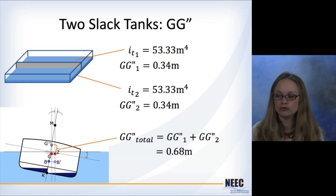To do this, you calculate the free surface correction for each tank individually and then you just add them up. So these are the same tanks we did before. The moment of inertia is 53 meters to the fourth, and then the free surface correction is 0.34. And then to do the total, you just add all those up. So now the total free surface correction is 0.68 meters.